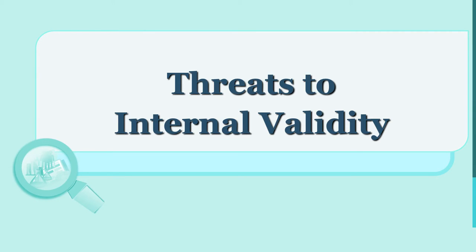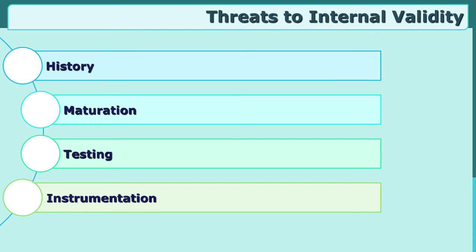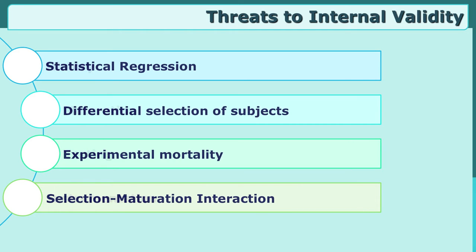There are threats to these validities — challenges — so that if the researcher is not careful, the results may go haywire. There are a variety of threats to internal validity, and Campbell and Stanley have written an excellent book, though it is very old, but we are still referring to it. The threats listed by them are: History, Maturation, Testing, Instrumentation, Statistical Regression, Differential Selection of Subjects, Experimental Mortality, and Selection-Maturation Interaction. Eight threats are listed.